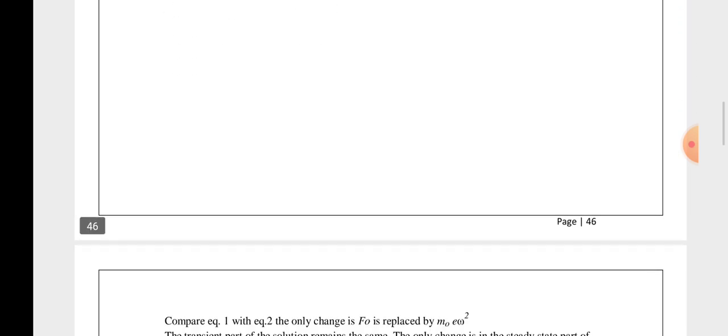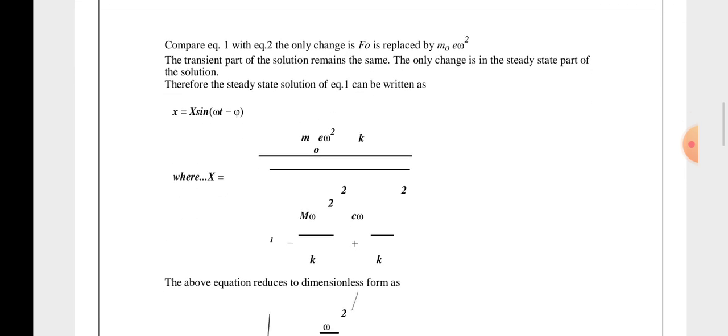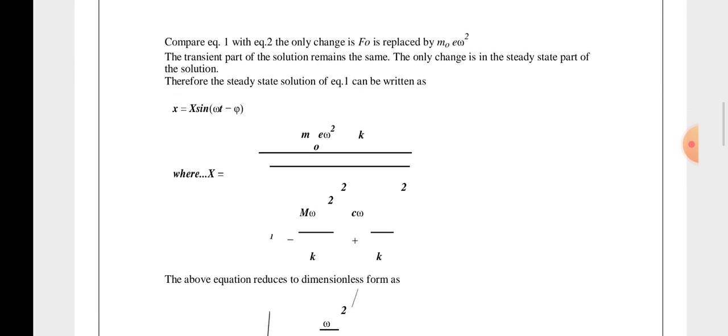Comparing equation number 1 and 2, we got that x equals capital X sin(ωt - φ). The transient part of this solution remains same. Comparing equations 1 and 2, only the change is F0 is replaced by m0 e ω². The transient part of the solution remains same. Only change is in the steady state part of solution.